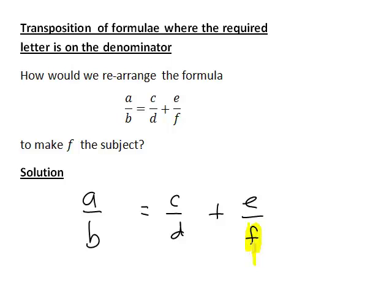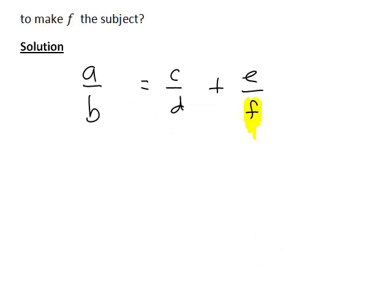So the question is, how do we rearrange this formula to make f the subject? It would be a good idea to start off by making the term involving f isolated, so e divided by f, if we could have that on one side of the equation and rearrange so that all other terms are on the other side.